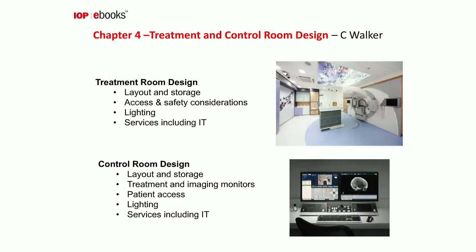There are two other sections in Chapter 4 on treatment room design and control room design. Although these are not about radiation protection, they are very important for the efficient operation of the facility and to have as reasonable an environment as possible for the patient. Features described for treatment room design include lighting, which has to be carefully designed with dim lighting for radiographers setting up the patient, bright lighting for machine maintenance, and intermediate lighting perhaps for patient treatment. Control room design now has to take account of a much larger number of image monitors than it used to, with the addition of patient imaging as very much part of patient treatment.